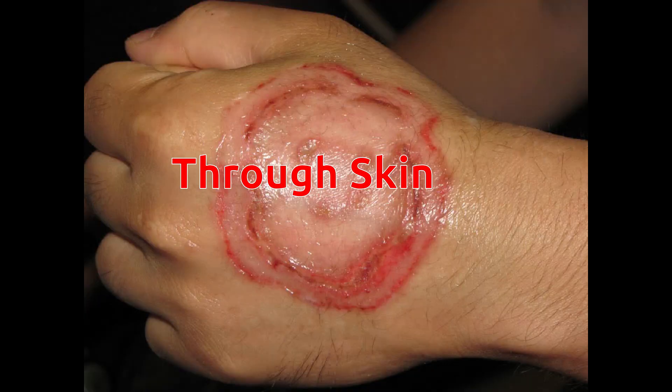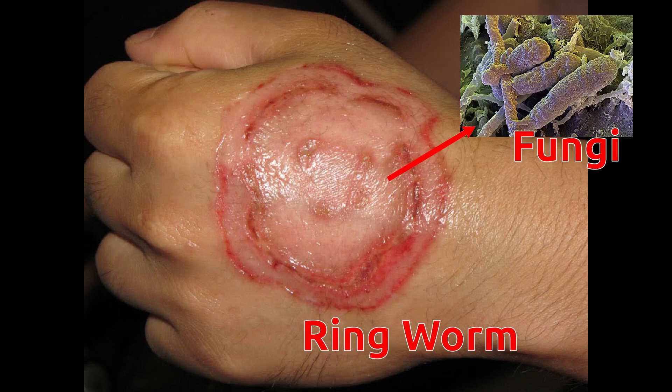Through the skin: some pathogens enter the body through the skin. A wound can also act as a pathway for pathogens. For example, ringworm disease is caused by the spores of a fungus.